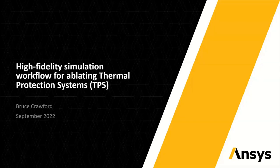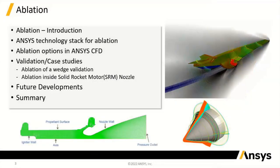Today we'll be talking about the ablation capabilities in ANSYS Fluent. The latest version is 2022 R2. What we're going to discuss is the process of ablation with different aerosystems requirements. We'll go through the current modeling capabilities in ANSYS Fluent, the new ablation modeling panel available in 2022 R2, some validation case models, and future developments in ablation modeling.